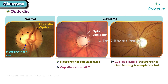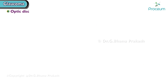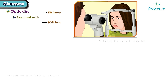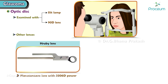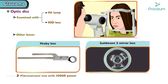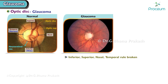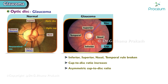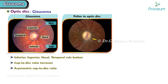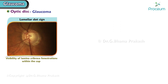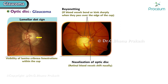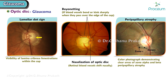In glaucoma, the neuroretinal rim is gradually decreased. Cup-to-disc ratio is more than 0.7 in glaucoma, and once the cup-to-disc ratio becomes one, neuroretinal rim thinning is completely lost — this state is known as glaucomatous optic atrophy. The optic disc is examined with a slit lamp and 90-diopter lens. Other lenses used are the Volk lens (a plano-concave lens with 58–60 diopter power) and the Goldmann 3-mirror lens with 60-diopter power. Optic disc changes in glaucoma include: ISNT rule broken, increased and asymmetric cup-to-disc ratio, pallor, optic disc splinter hemorrhages, laminar dot sign, bayonetting, nasalization of the optic disc, peripapillary atrophy, and optic atrophy.